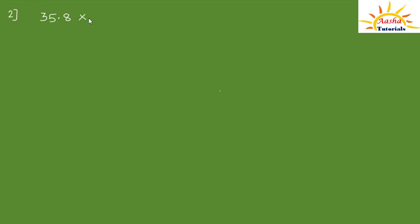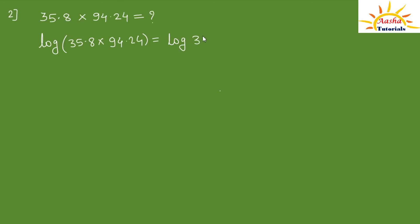Let's take one more problem to understand it better. Suppose we want to find 35.8 × 94.24 using a log table. Since there is a product, we apply the product rule: log of (35.8 × 94.24) equals log of 35.8 plus log of 94.24.